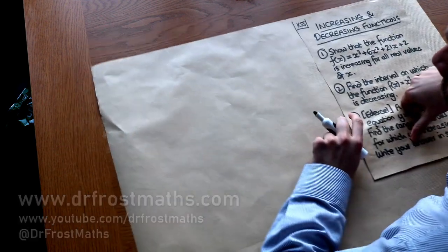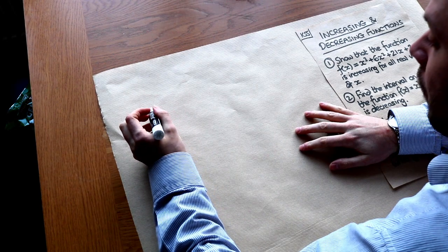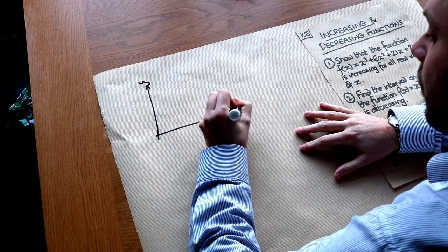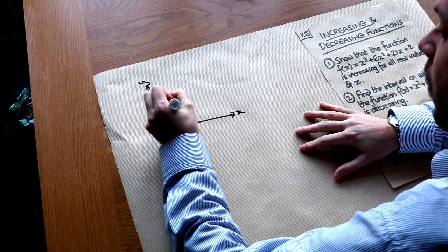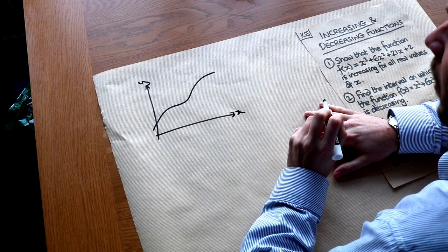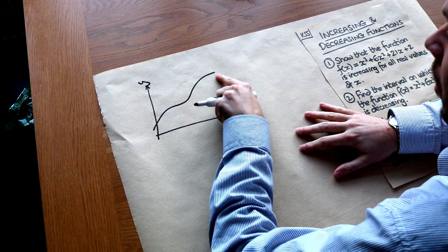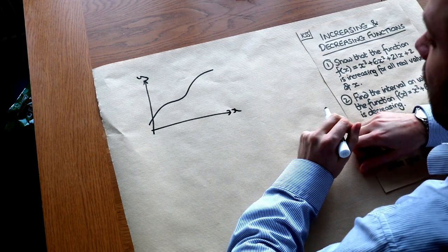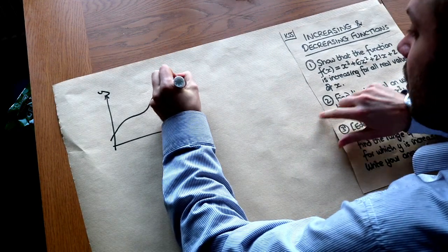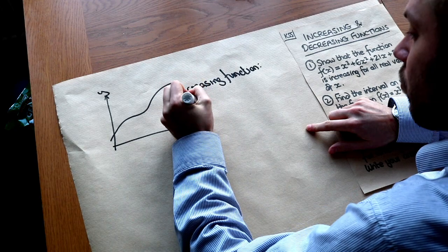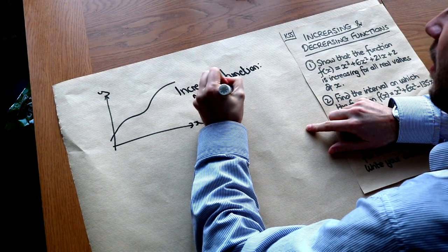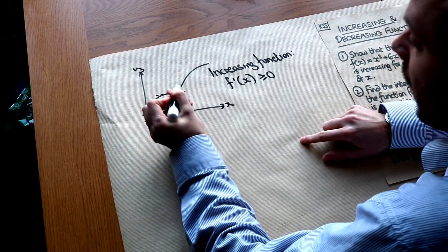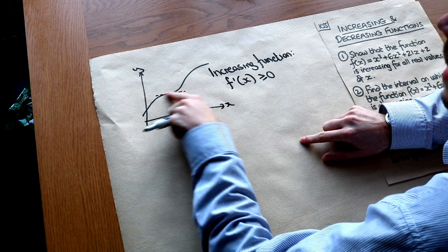What do we mean by an increasing function? It simply means that the function, if we were to sketch it as y against x, is always going uphill. So we can see that the gradient of this graph is always positive. There's some debate about exactly what an increasing function means, but an increasing function is one where the gradient of the graph is at least zero. That means it can sort of plateau — you can have stationary points — but it's never going downhill.